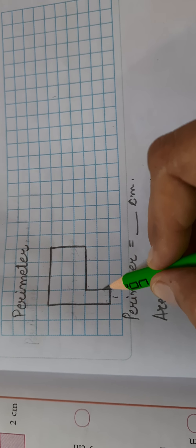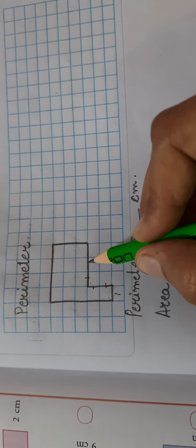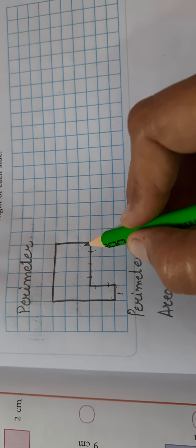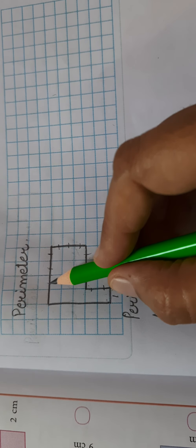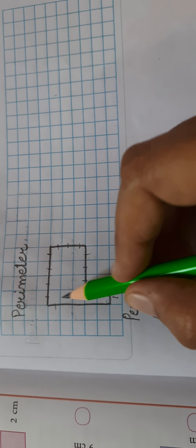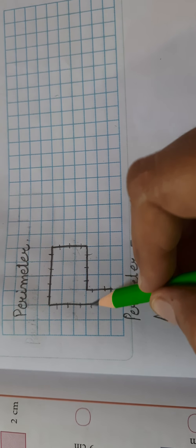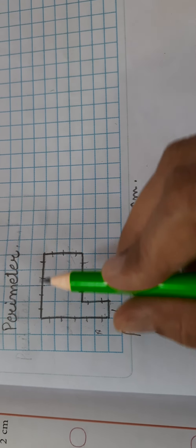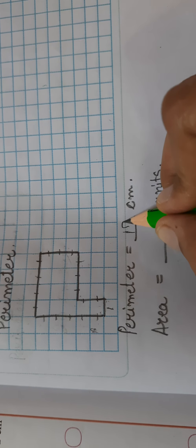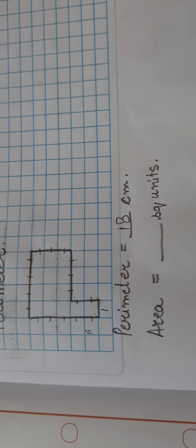So let us count it. I am starting it from here as 1, 2, 3, 4, 5, 6, 7, 8, 9, 10, 11, 12, 13, 14, 15, 16, 17, 18. Right, so here I am finishing at 18. So perimeter of this shape will be 18 cm.